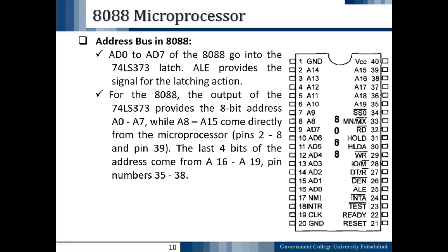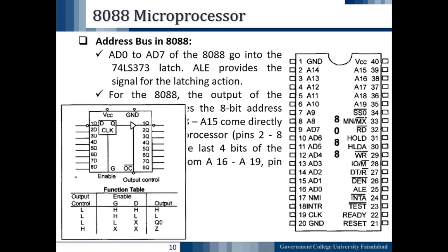For the 8088 microprocessor, the output of the 74LS373 provides the 8-bit address A0 to A7, while A8 to A15 come directly from the microprocessor on pins 2 to 8. The last four bits of the address, A16 to A19, come from pin numbers 35 to 38. Here in the diagram you can see the block diagram of the 74LS373 latch, which is a combination of D latches.